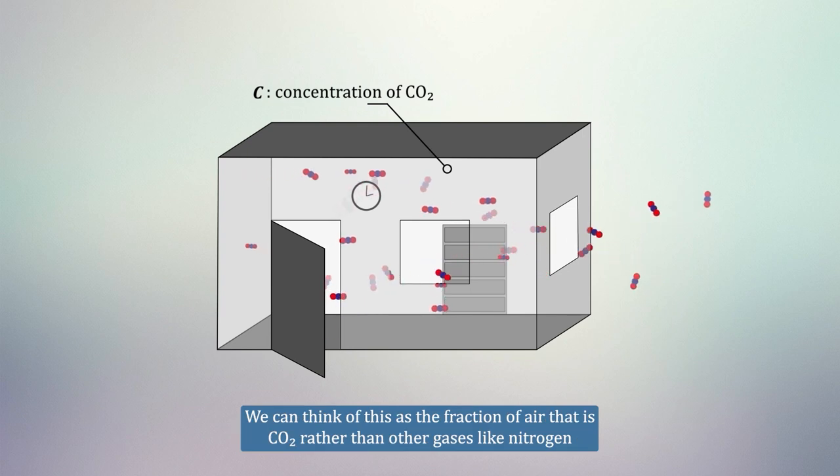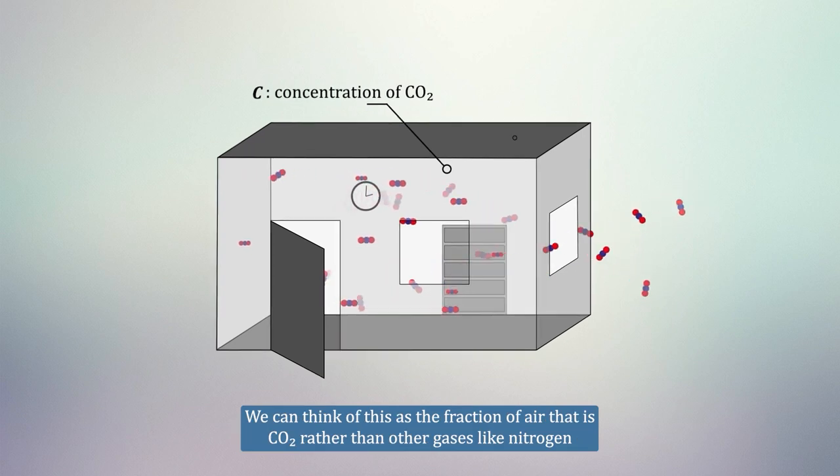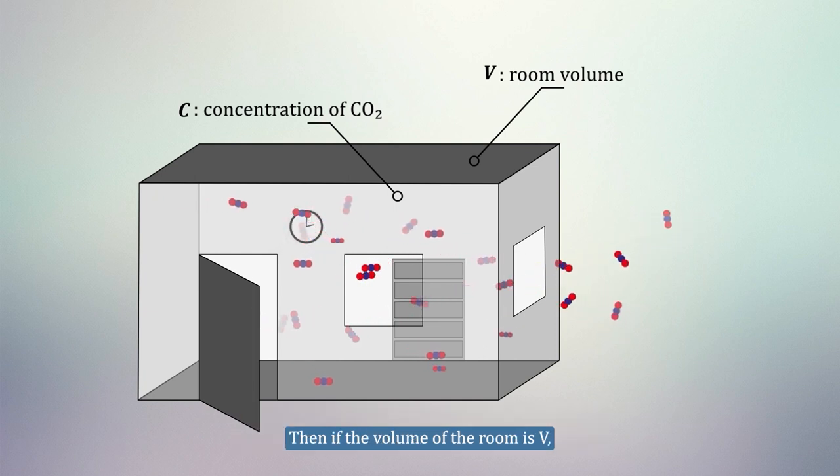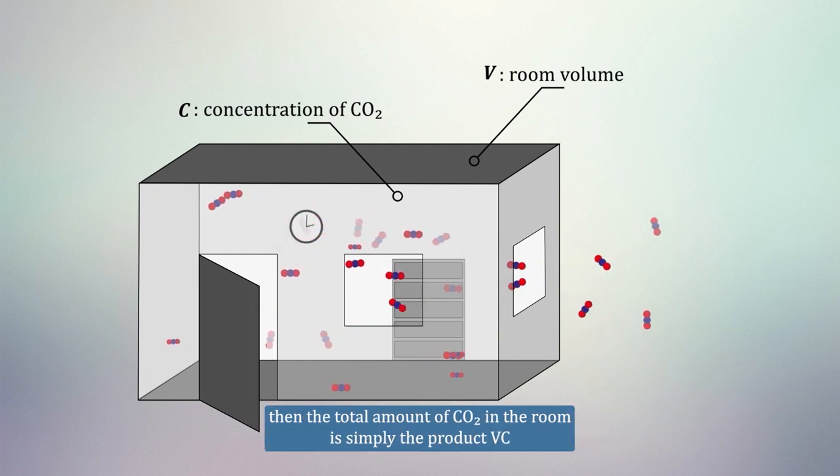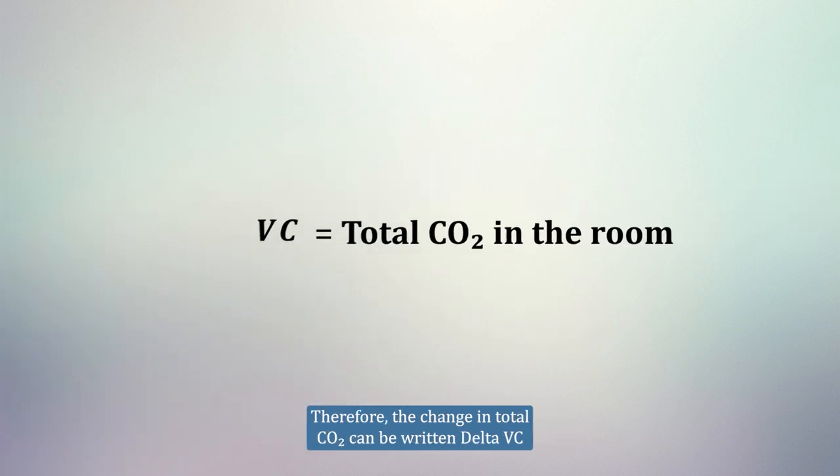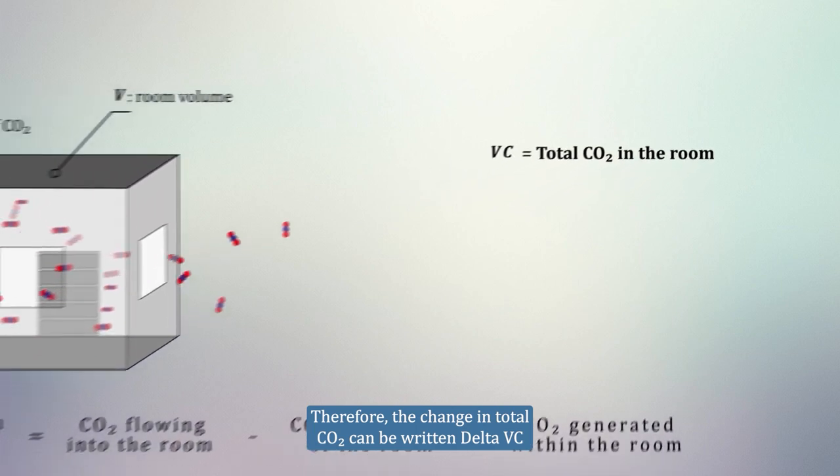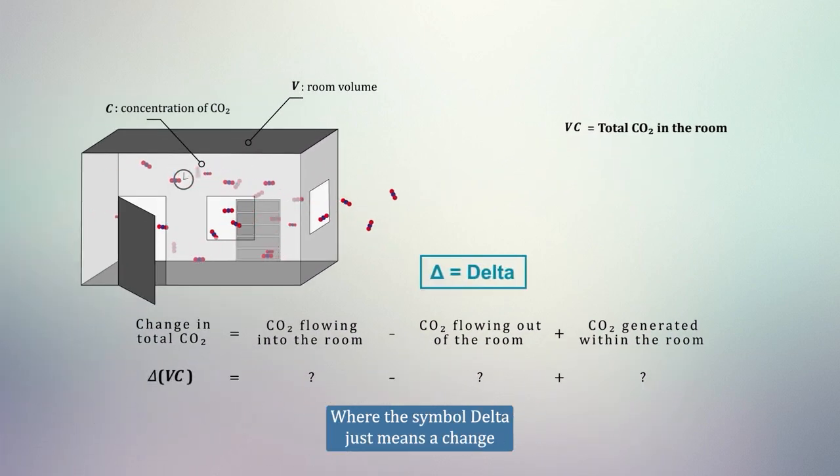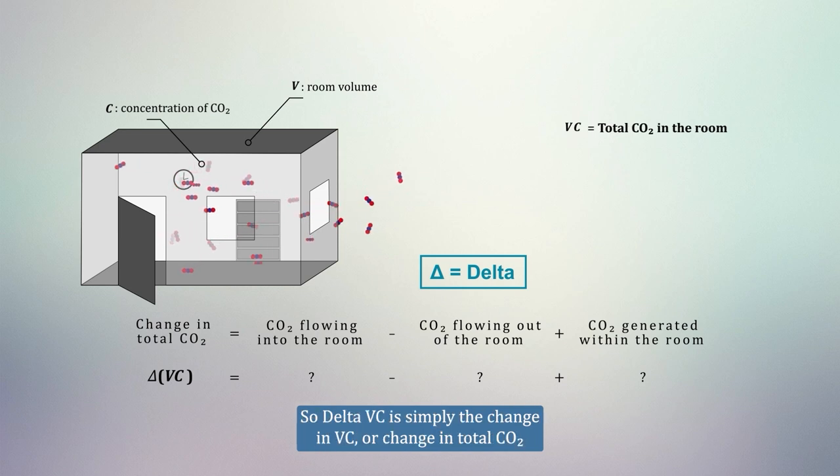We can think of this as the fraction of air that is CO2, rather than other gases like nitrogen. Then if the volume of the room is V, then the total amount of CO2 in the room is simply the product V times C. Therefore, the change in total CO2 is delta VC, where the symbol delta just means change. So delta VC is the change in VC, or change in total CO2.